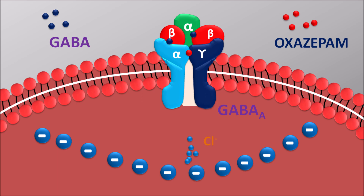When GABAergic transmission is increased, it reduces neuronal excitation leading to decreased anxiety, decreased agitation and irritability. At the same time it can also increase sedation and sleep induction.